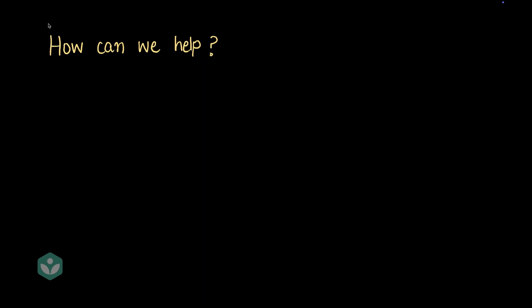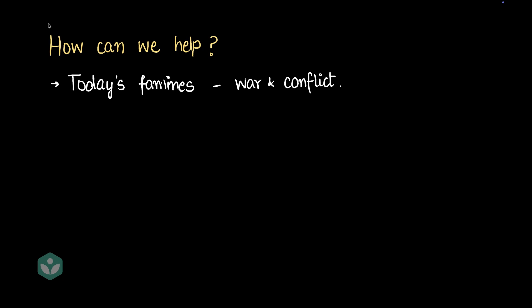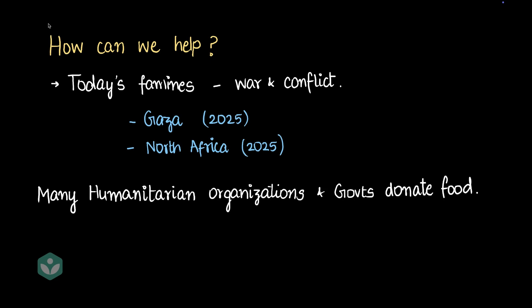How can we help? There are famines around the world today, and today's famines are all associated with war and conflict. Gaza in 2025 is experiencing food shortage, and North Africa is experiencing food shortage too. Many humanitarian organizations and governments donate food to these regions. An example is the UN's World Food Programme — they're doing a good job distributing food across needy areas. The world has way more food than it needs; all we need to ensure is that the people who need it the most actually get the food.